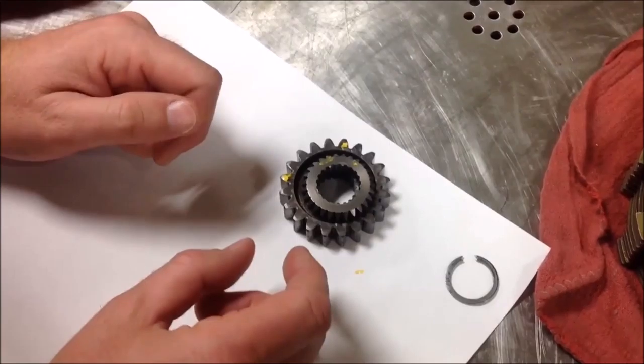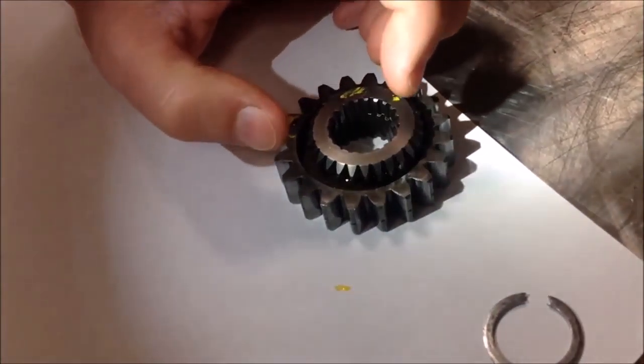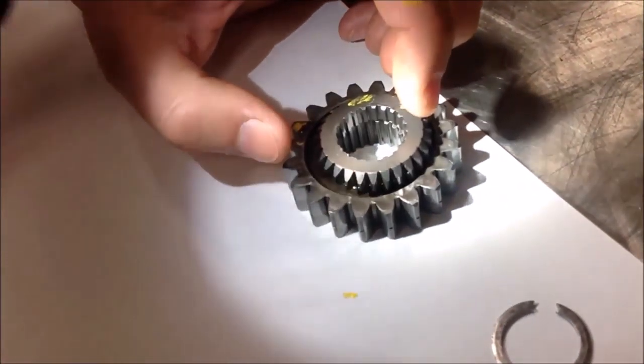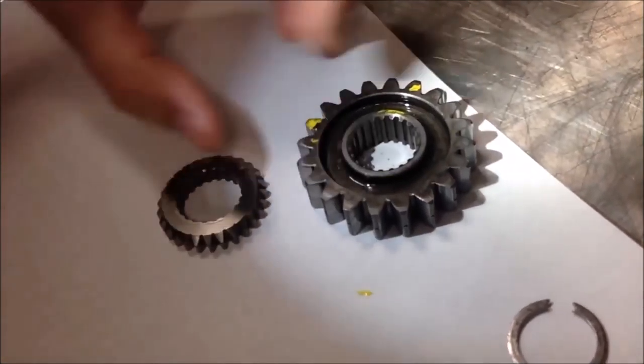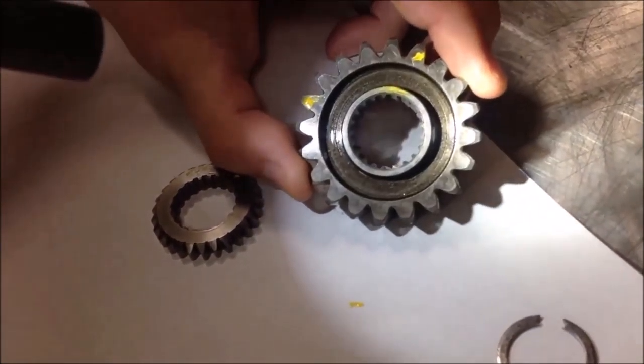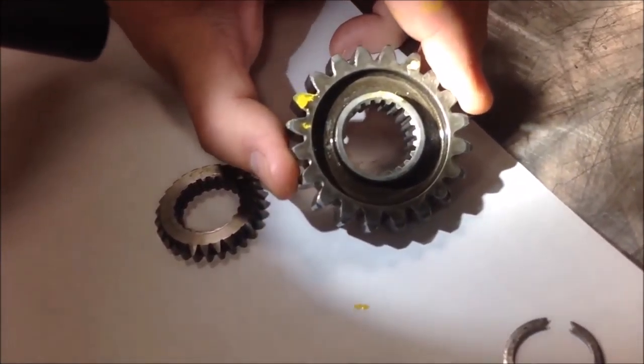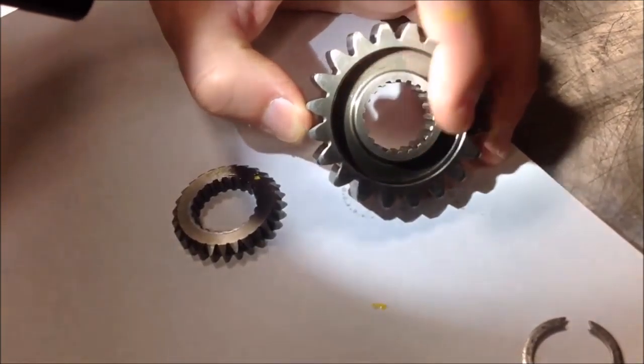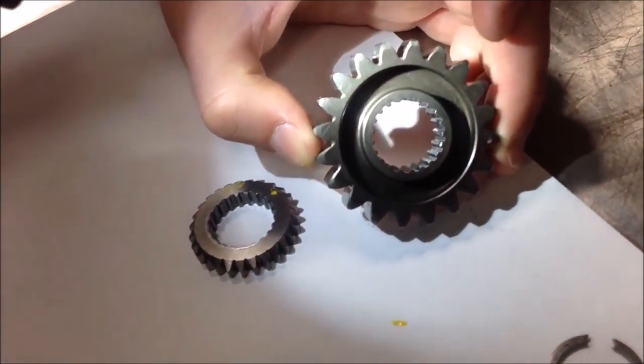This edge here, called a chamfer, is machined off here intentionally. What we're going to notice is even if you look at this inside gear, you can see how this edge is chamfered as well. Compared to when I flip it backwards, you can see how it's perfectly flat.